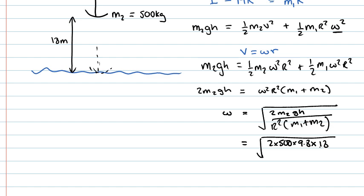The height it's moved through is 18 meters. The radius of the disk was 1.2 meters squared and the mass M1 was 350 kilograms,